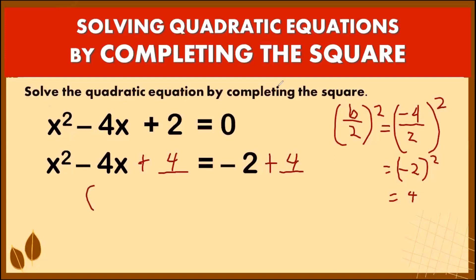Get the square root of the first term x², which is x, and the square root of 4, which is 2. Since 4x is minus, the binomial sign is also minus. So the factors are (x − 2)², and that is equal to positive 2 on the right side.